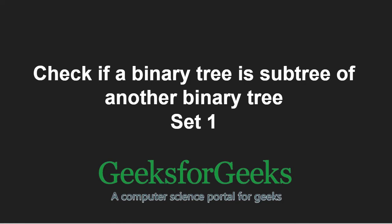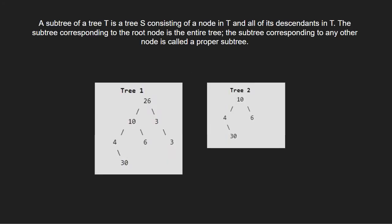First, let us take an example. A subtree of a tree T is a tree S consisting of a node in T and all of its descendants in T. The subtree corresponding to the root node is the entire tree. The subtree corresponding to any other node is called a proper subtree.